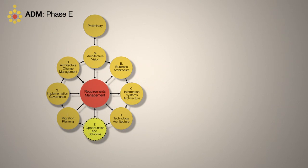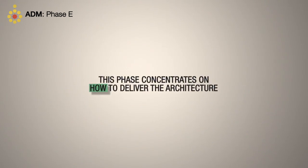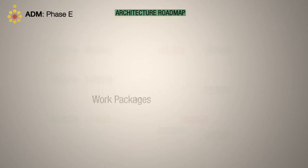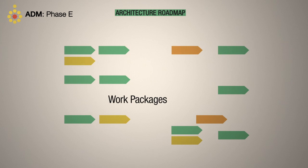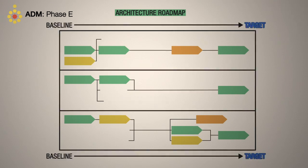Phase E generates the first complete version of the architecture roadmap by combining the analysis and suggestions from the architecture development phases B, C, and D. This phase concentrates on how to deliver the architecture, so it looks at creating an architecture roadmap, listing work packages in a timeline to realize the target architecture.